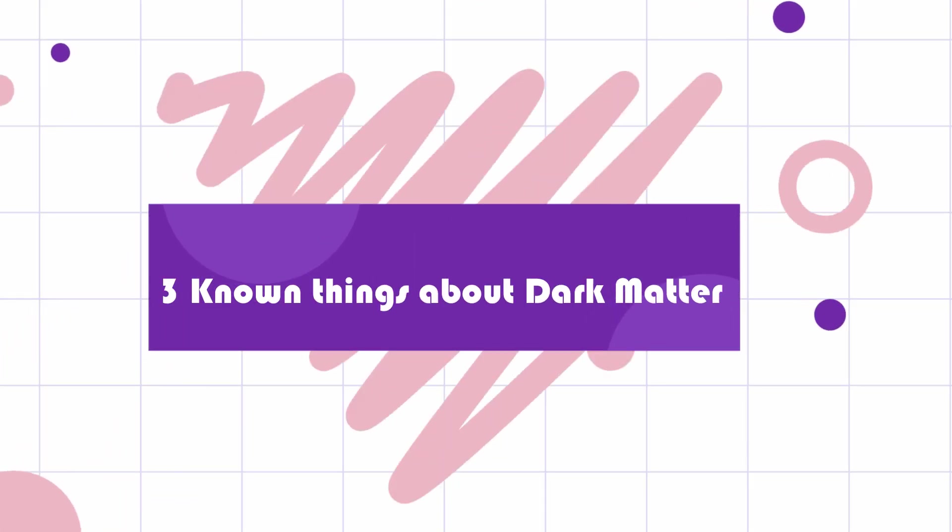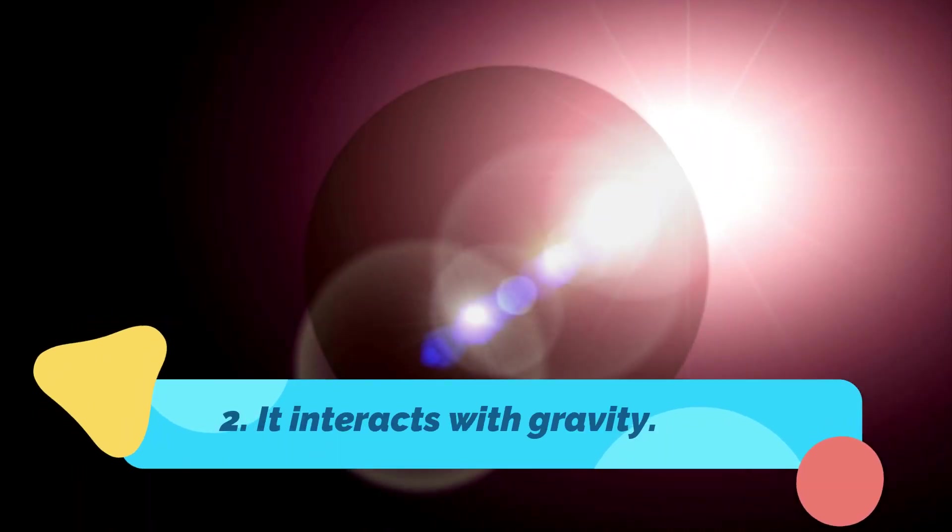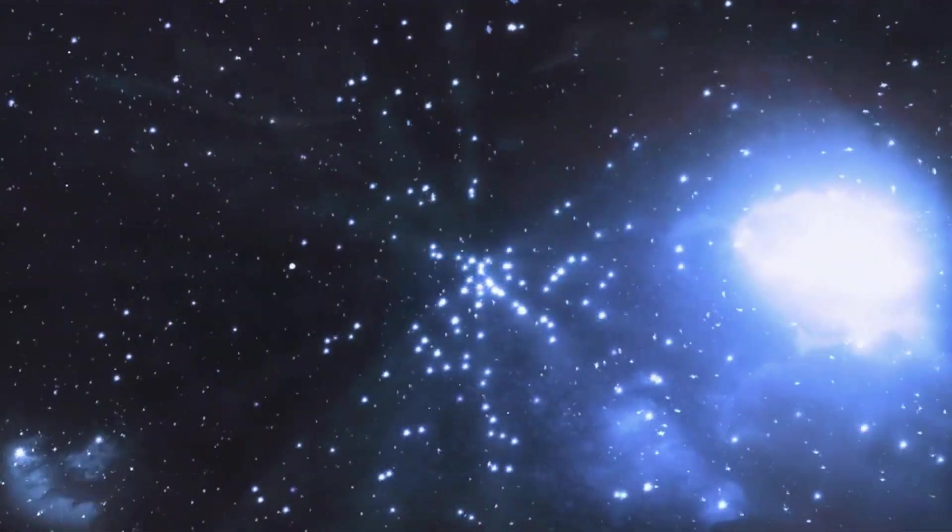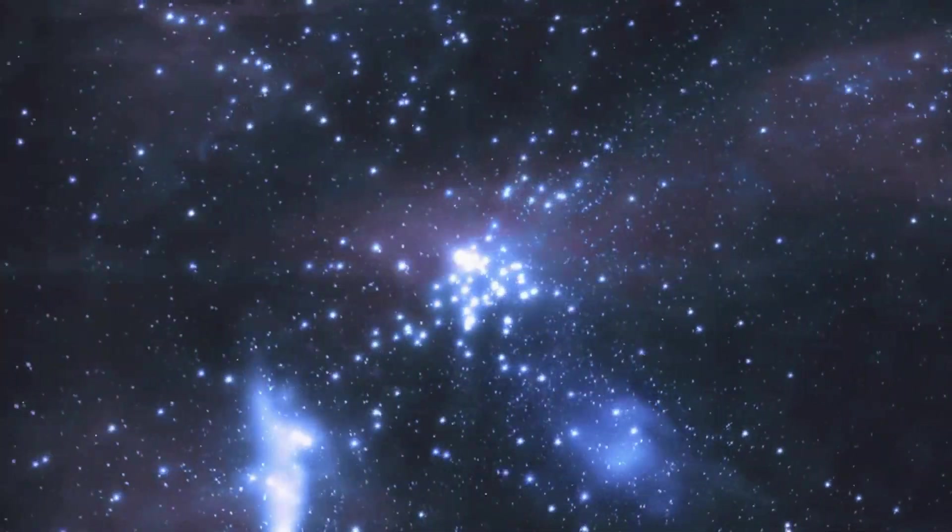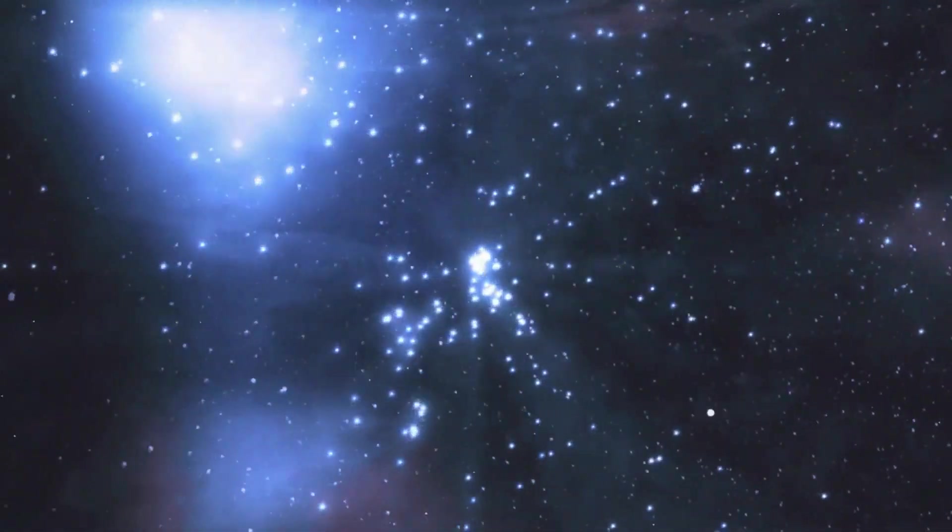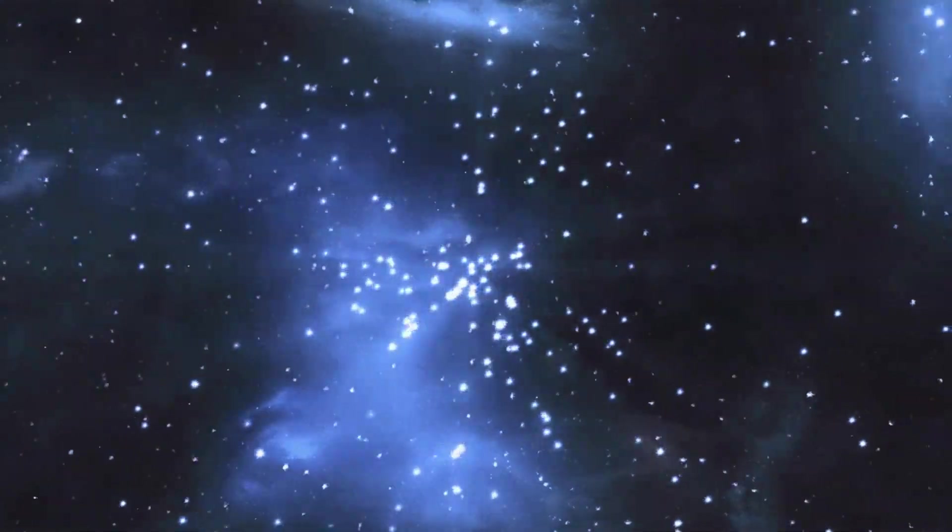We know three things about dark matter. One, there is something out there. Two, it interacts with gravity. Three, there is a lot of dark matter. Scientists believe dark matter is made up of unique particles that don't interact with light and matter.